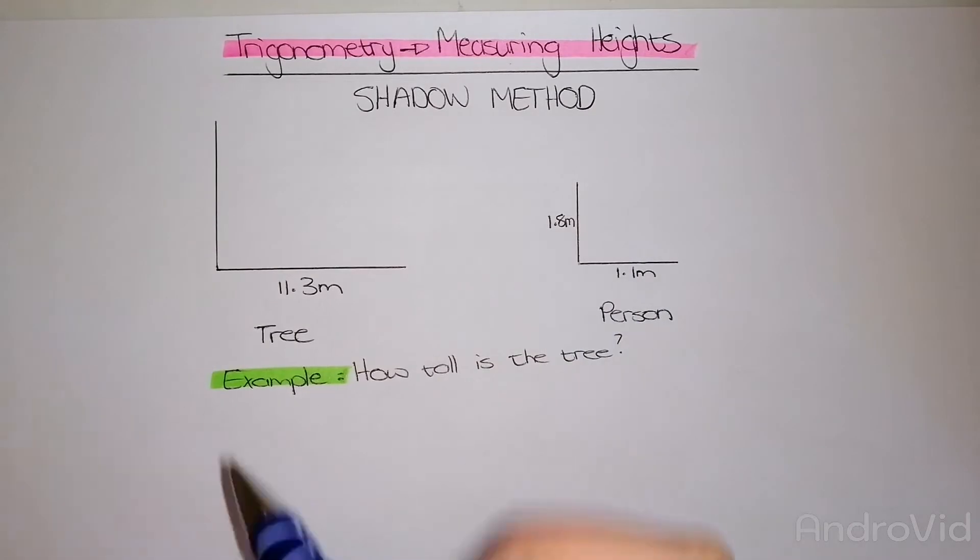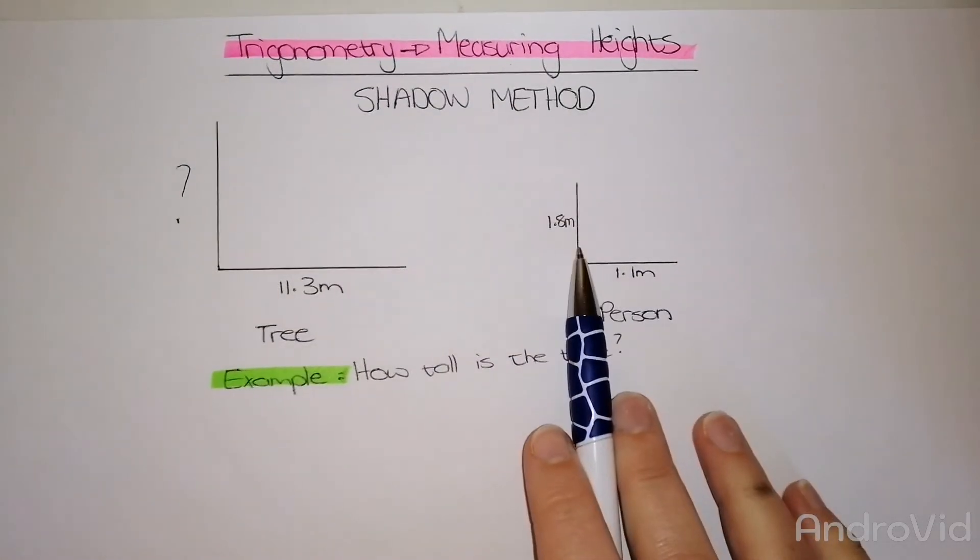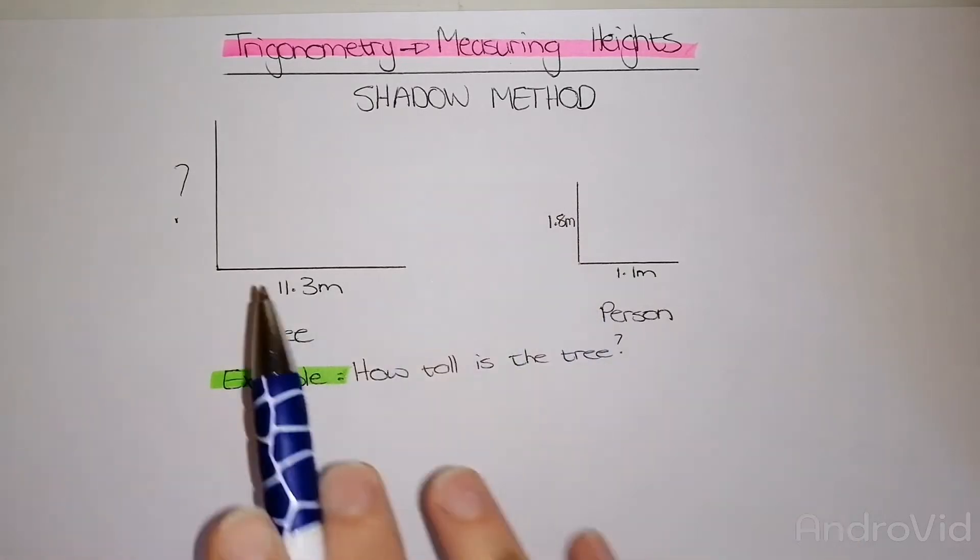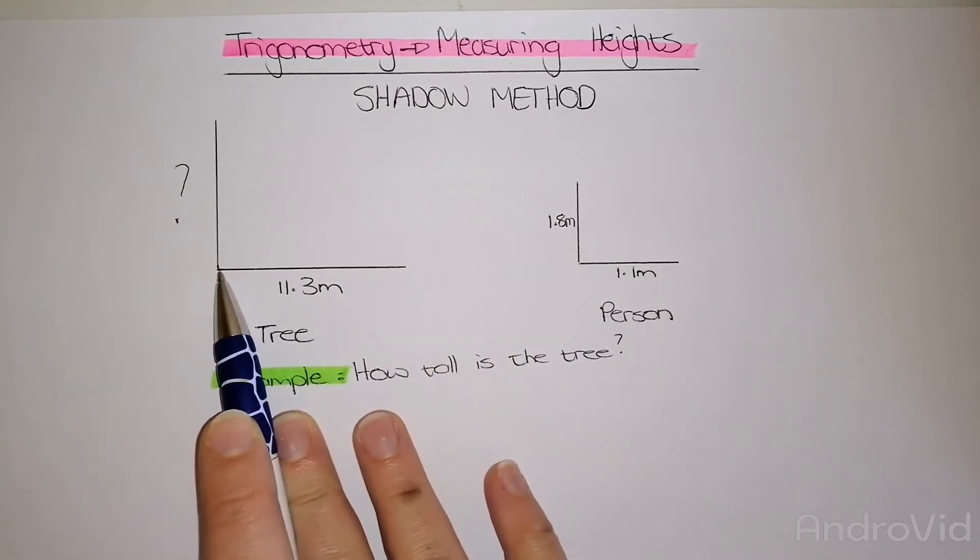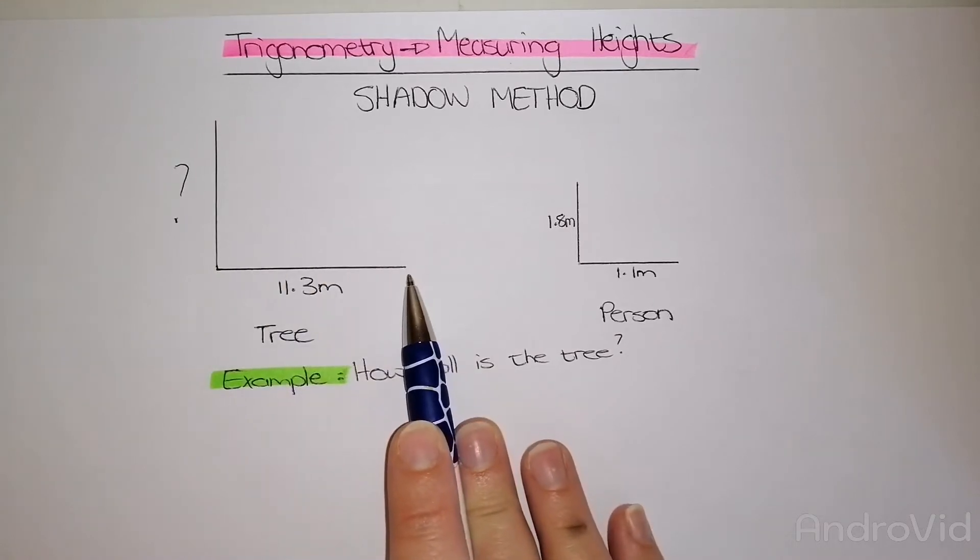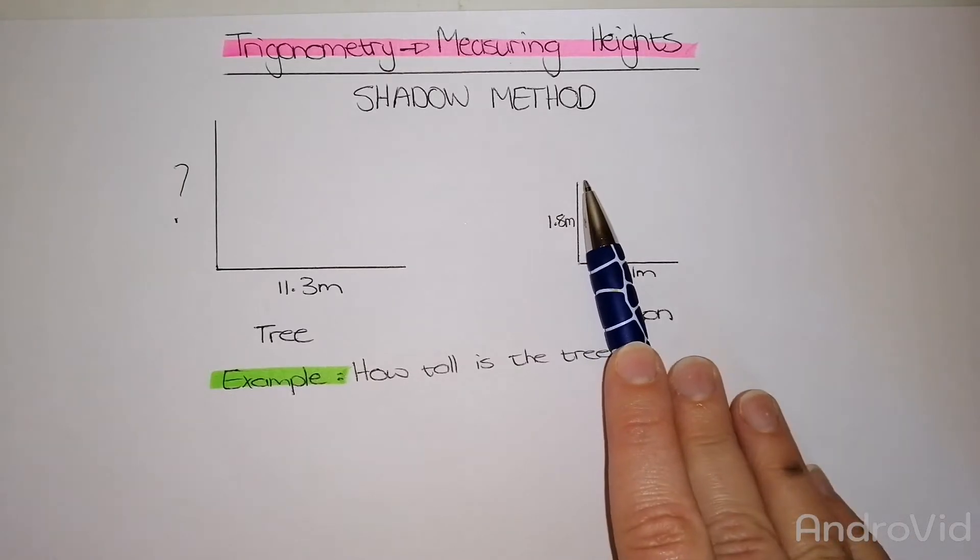What we need to do is find the height of the tree. Easy way of doing it: I have a measuring tape, put the tape right up against the object I'm measuring, in this case a tree, right to the end of the shadow.